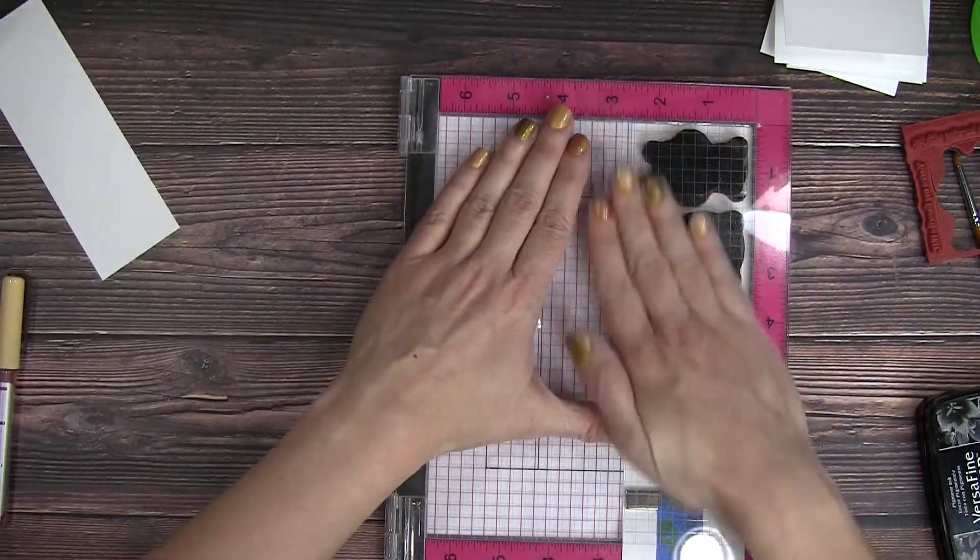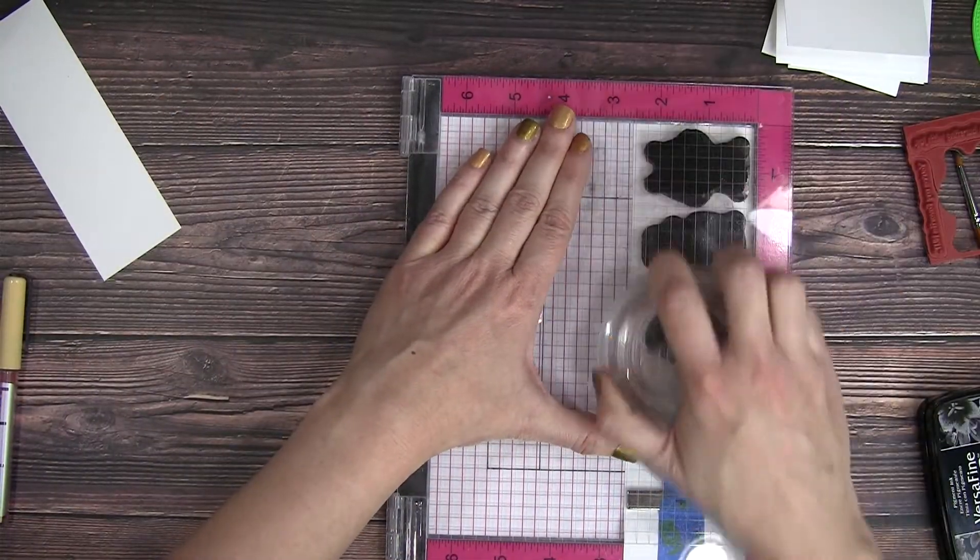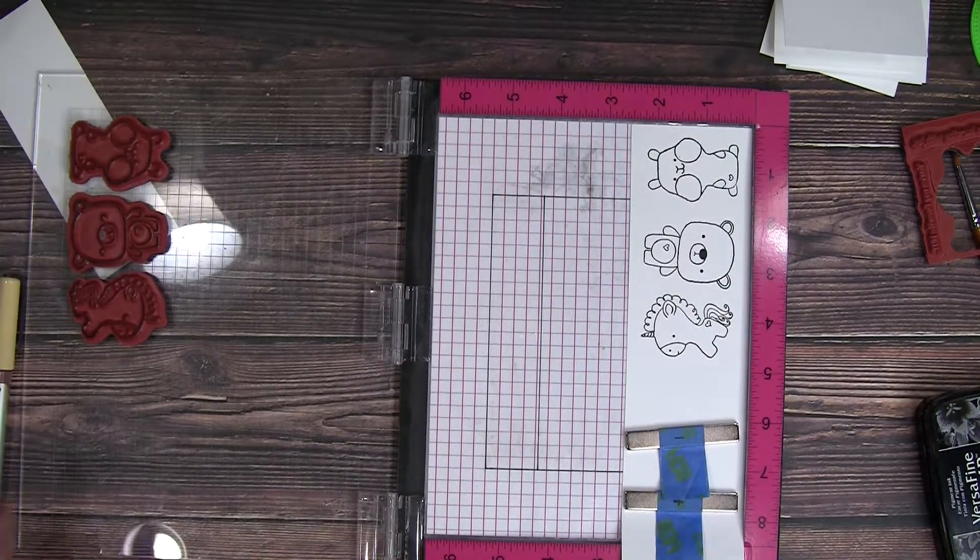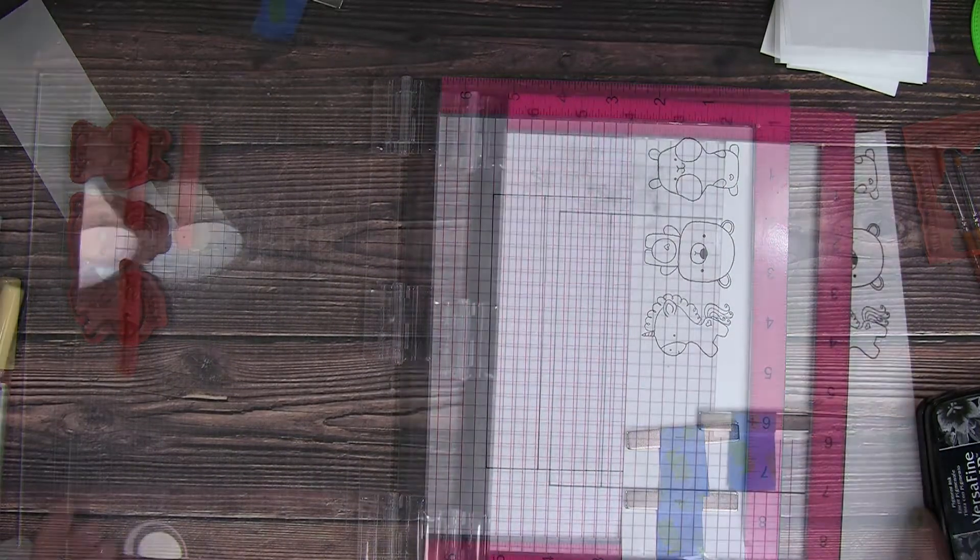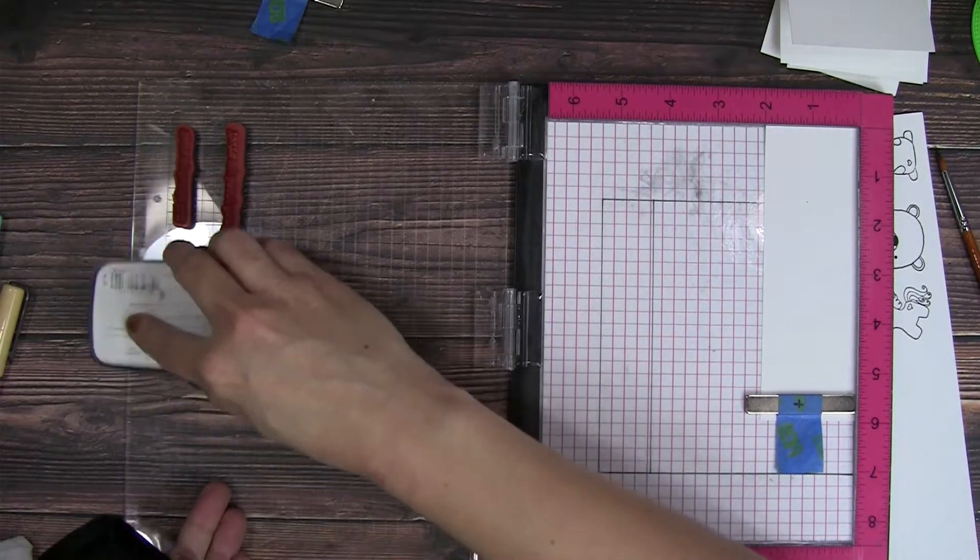I lined those all up and I'm going to use some VersaFine Claire ink in the nocturne black and just stamp those once. Got a great impression, once was all I needed.